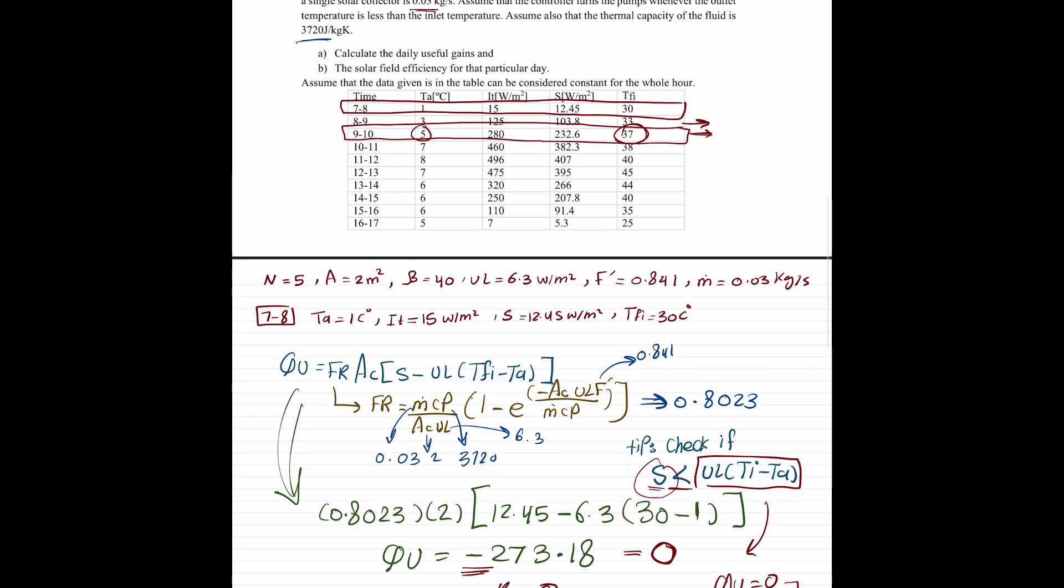Just before moving on to this row, here, we forgot that there are 5 collectors. So, we basically multiply the area 2 times 5. This won't affect it. We're still going to get a negative value, but we're going to multiply it in this row. So, row 9 and 10.